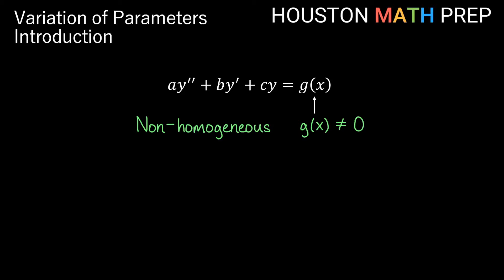When we say our equation is linear with constant coefficients, we mean that a, b, and c — the coefficients for the second derivative, the first derivative, and y on the left side — are all constants, and our function on the right-hand side is just some function of x. Non-homogeneous means that this right-hand side, g of x, is not zero.